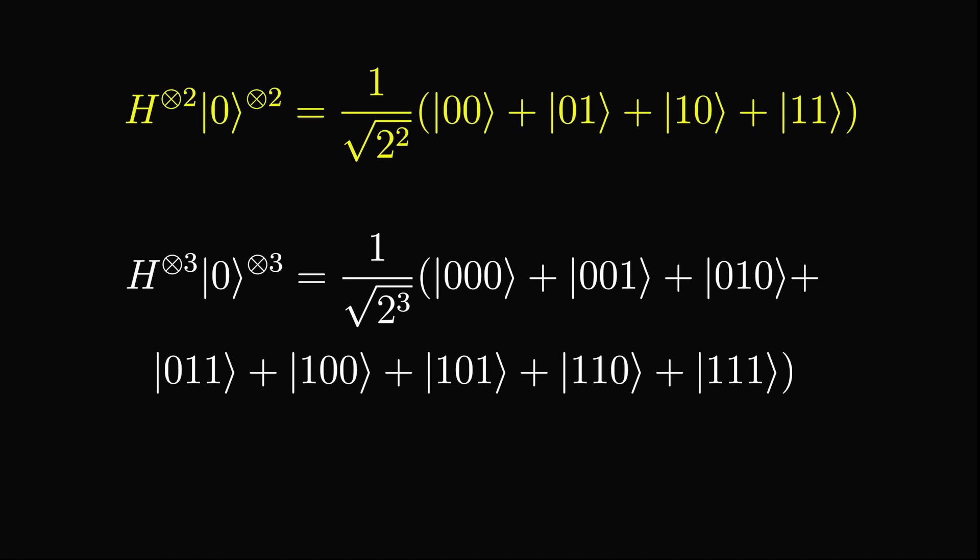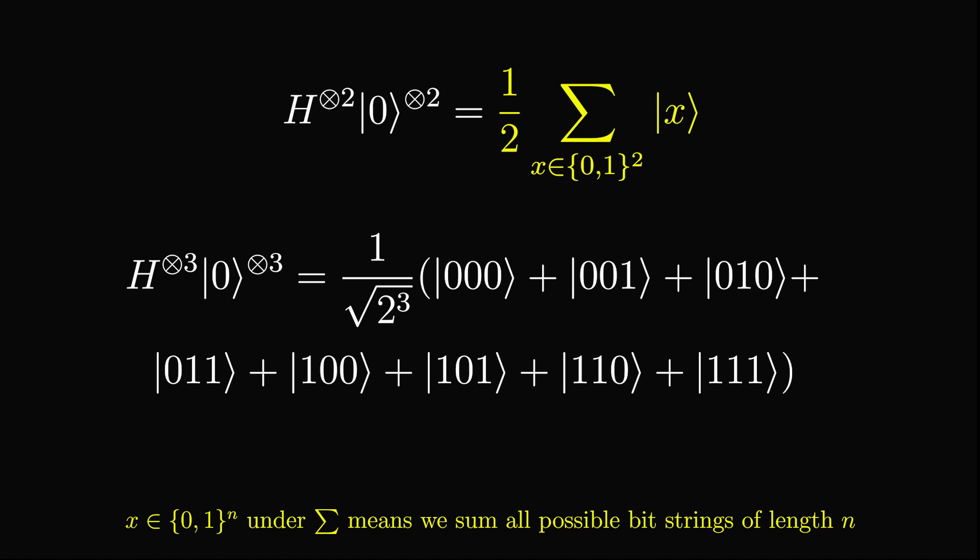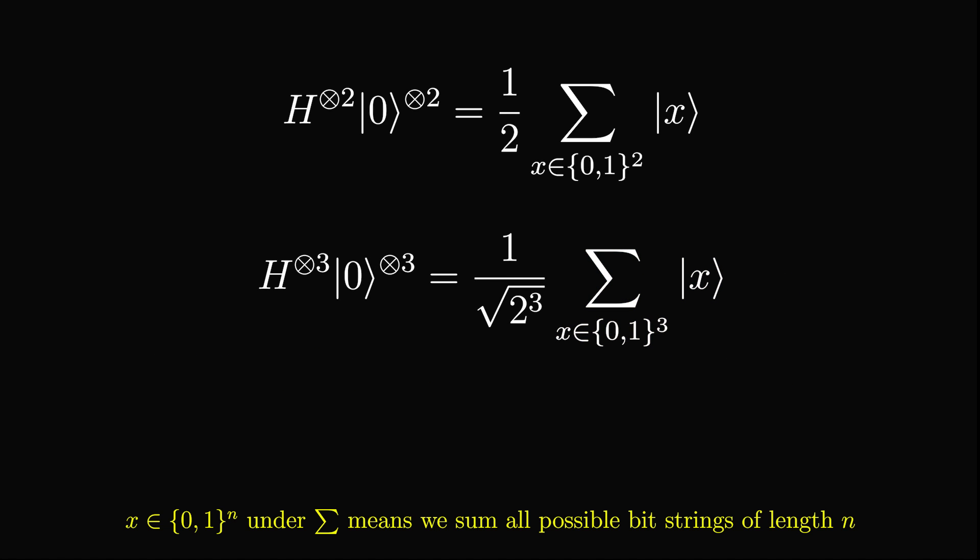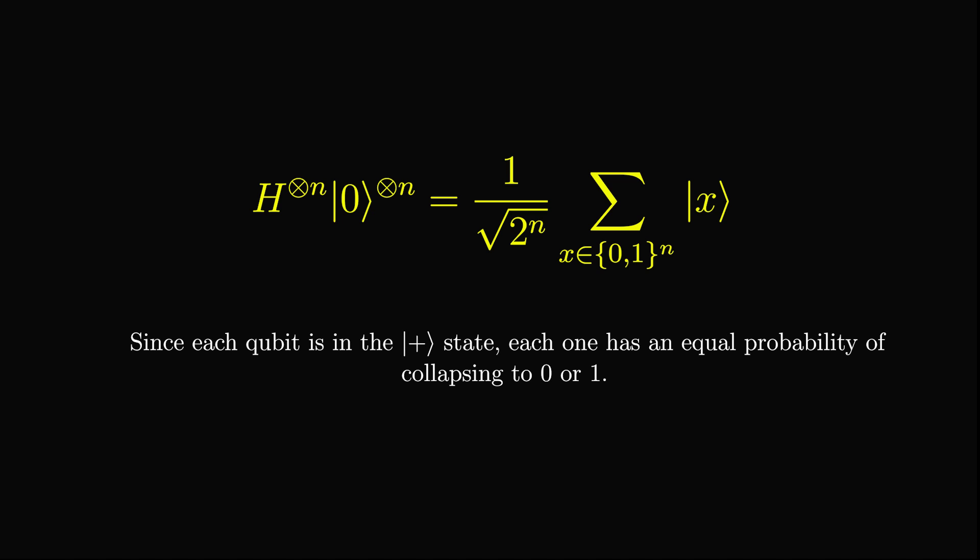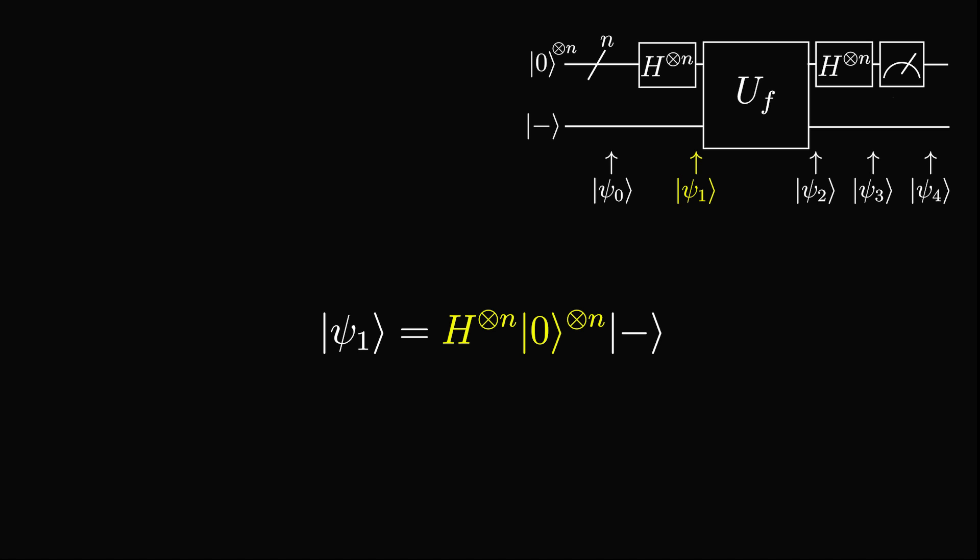In the case where n equals 2, it equals 1 over 2 times the sum over all possible x's that are bitstrings of length 2. We can do the same thing for n equals 3. Generalizing these findings, we can see that applying Hadamards to a register of n zeros gives us 1 over root 2 to the power of n times the sum of all x's that are bitstrings of length n. Intuitively, this makes sense since each qubit has an equal chance of being 0 or 1, so every possible combination can occur with equal probability.